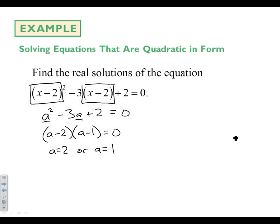So a equals 2 or a equals 1. Let's substitute back in. What does a equal? A is x minus 2. So x minus 2 equals 2 or 1. We'll add 2 to both sides and we'll get 4 or 3. 3 or 4 is your solution.